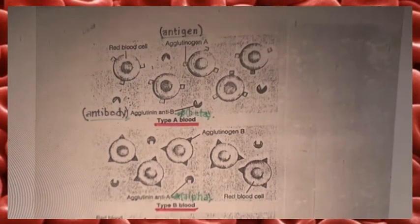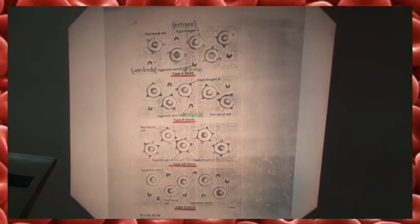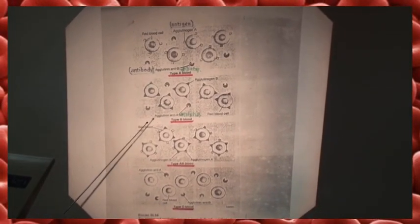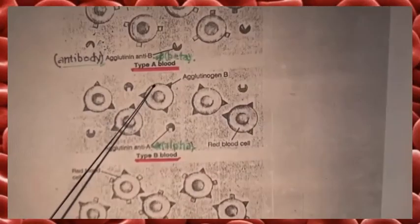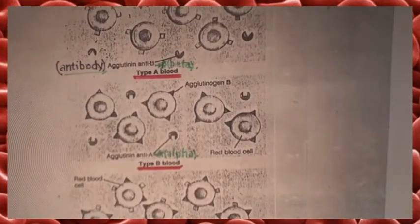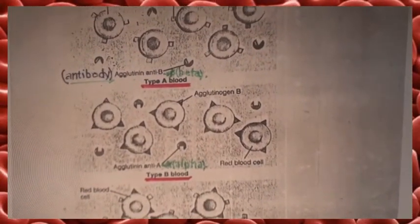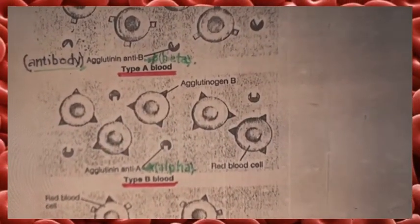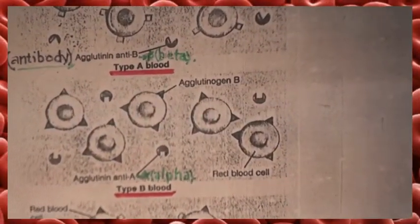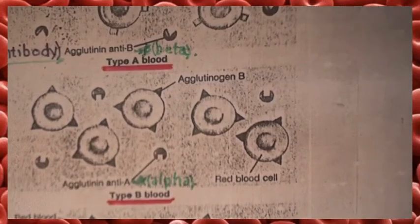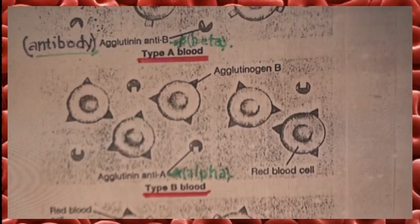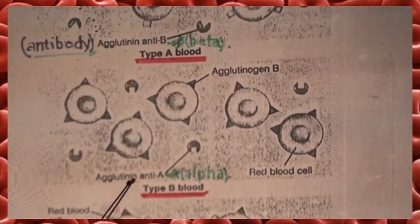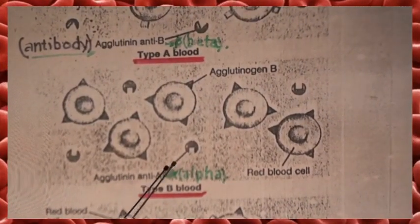Type B blood has B antigens, or agglutinogen B, on the red blood cells. In the plasma of these individuals, there are alpha antibodies, or agglutinin anti-A.